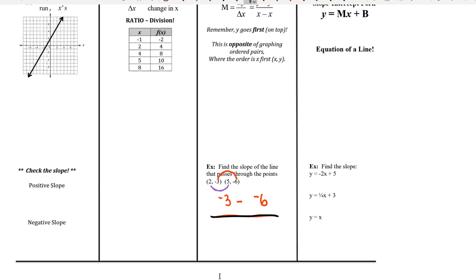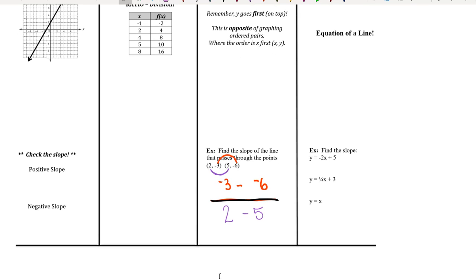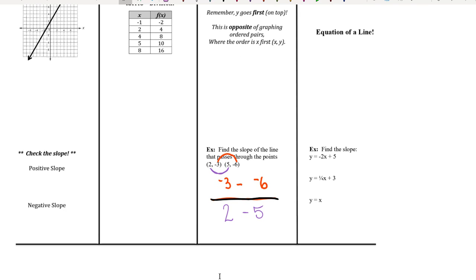And I started with negative 3 to negative 6. So in the bottom, I start with 2 because that goes with the negative 3. So 2 is the x coordinate that goes with the negative 3 y coordinate. So 2 minus 5. And then I evaluate each of those expressions to get the ratio. So I'm going to have an answer on the top for the change in the y's. And then I'll have an answer on the bottom for the change in the x's.